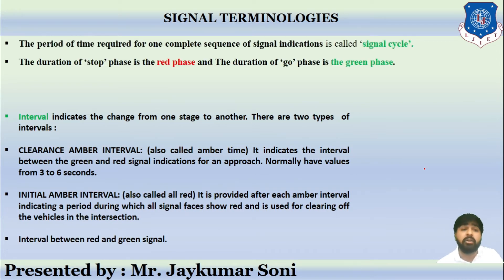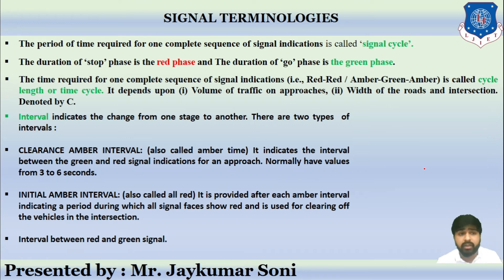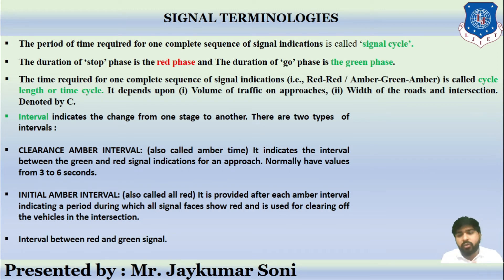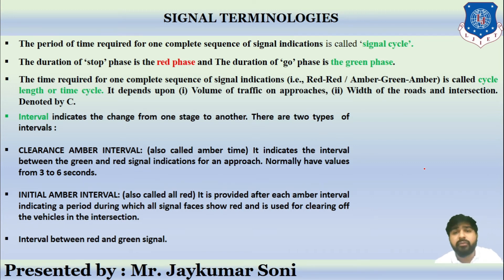Let us discuss the signal terminologies. The period of time required for one complete sequence of signal indications — red, green, and amber — is called a signal cycle. The duration of the stop phase is the red phase, and the duration of the go phase is the green phase. The time required for one complete signal sequence is called cycle time or cycle length, denoted by C. It depends upon the volume of traffic at the approaches and the width of the road and intersection.